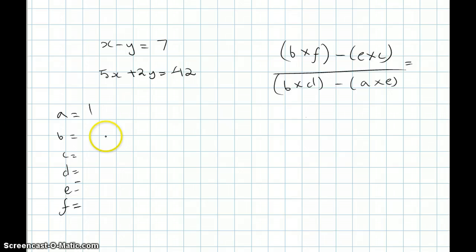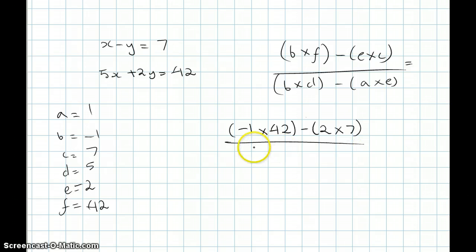And that would give us, let me just write again the values. a is 1, b is minus 1, c is 7, d is 5, e is 2, and f is 42. So minus 1 times 42 minus 2 times 7 over minus 1 times 5 minus 1 times 2. That would give us minus 56 over minus 7, which would give us 8. So our x value is equal to 8.